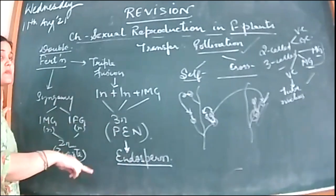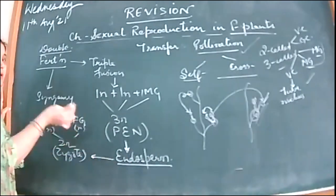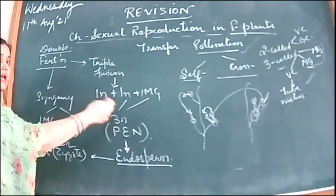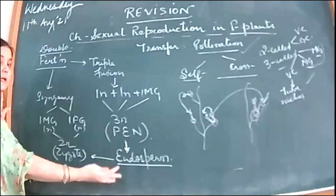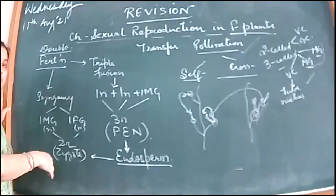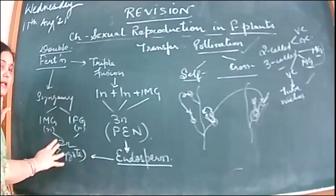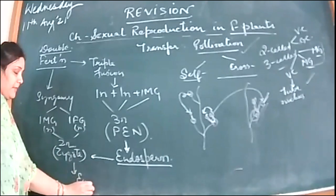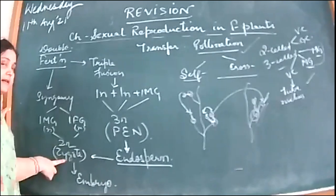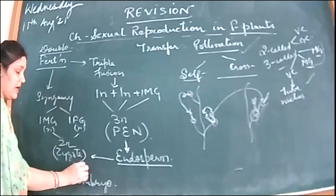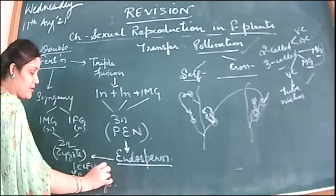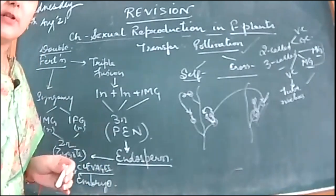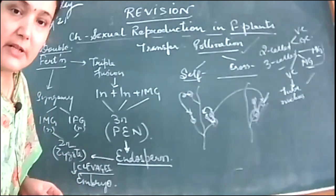This endosperm will ultimately nourish the zygote. The zygote produces suspensor-type structures and gets nourished from the endosperm. This nourishment is provided to the zygote, and hence the zygote undergoes further cleavages forming the embryo. Embryos are produced after the zygote is nourished and undergoes the cleavages. How this embryo formation takes place — we will discuss it after looking at the video on double fertilization.